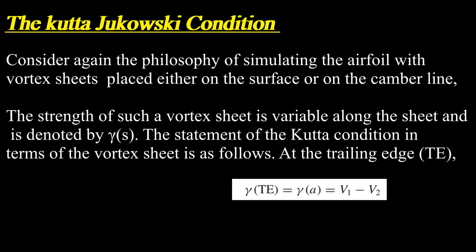Consider again the philosophy of simulating the airfoil with vortex sheets placed either on the surface or on the camber line. The strength of such a vortex sheet is variable along the sheet and is denoted by gamma(s). The statement of the Kutta condition in terms of the vortex sheet is as follows.